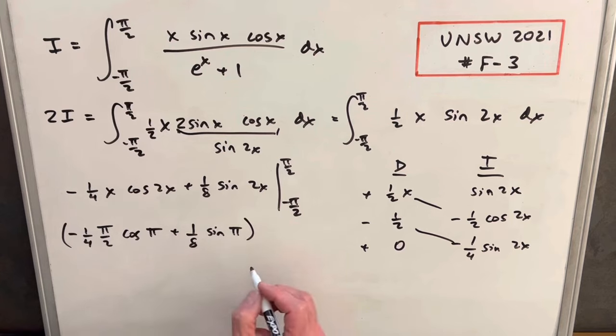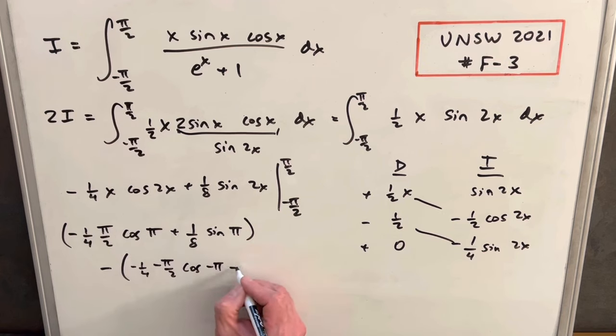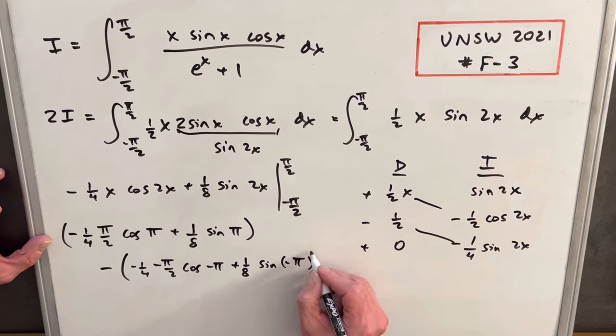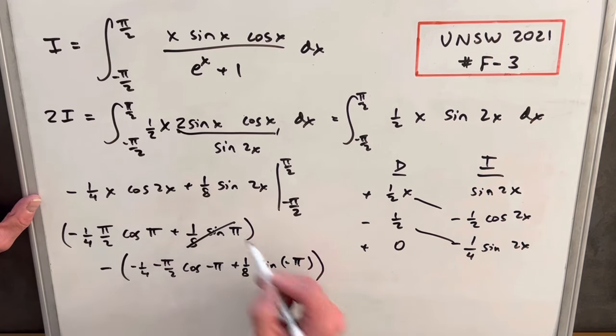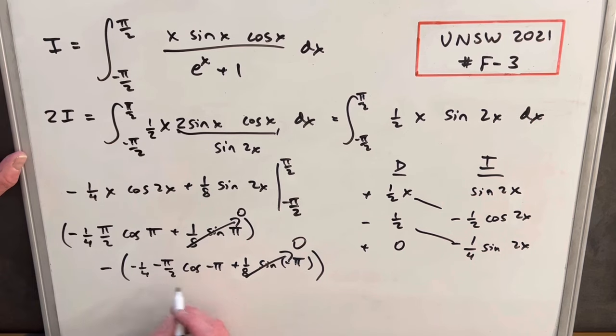So we'll have this. And then we're going to have minus, plugging in our minus pi over 2. So we're going to have minus one fourth minus pi over 2. And we'll have cosine minus pi. And we'll have plus one eighth, and then sine at minus pi. Sine at pi is zero, so that's going away. Sine at minus pi is zero, so that's going away. Then here, cosine at pi is actually just negative one, and this is also just negative one.